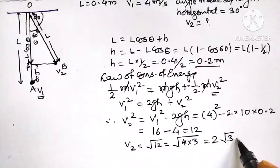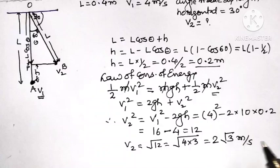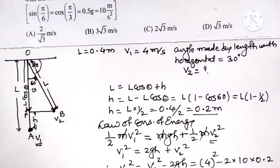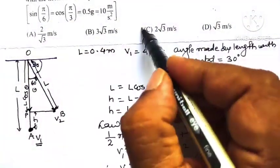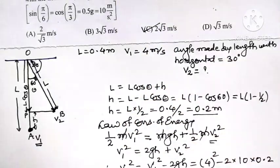Unit is meters per second. Out of 4 options, option C, that is 2 root 3, is the correct option for this question.